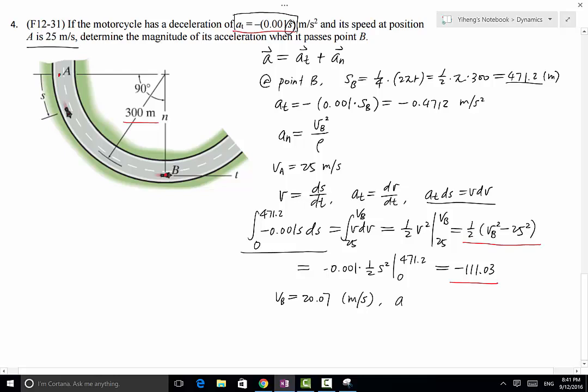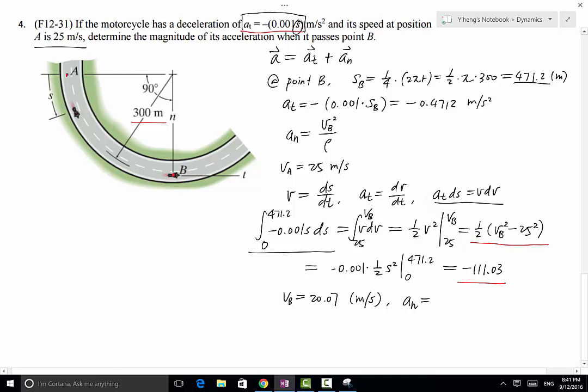And then as a result, a_n equals to v_B squared. So 20.07 squared over the constant radius of curvature 300. And that equals to 1.343 in the unit of meter per second squared.